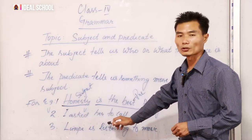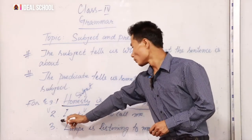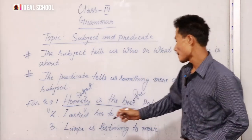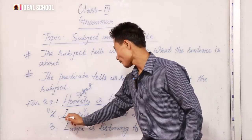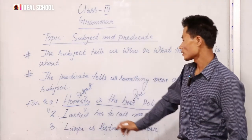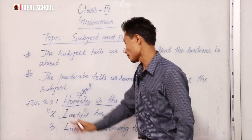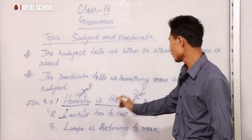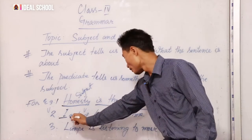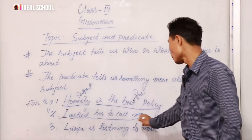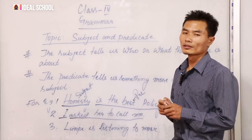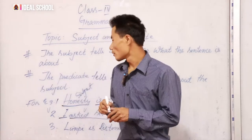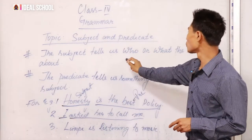In the sentence 'I asked her to call me,' here we can see what is a subject and what is a predicate. The subject will be 'I' — is it not? Because it is a noun. Sometimes it talks about a noun. And the rest, 'asked her to call me,' will be what? It is a predicate.